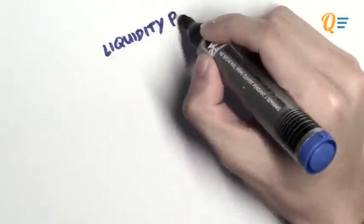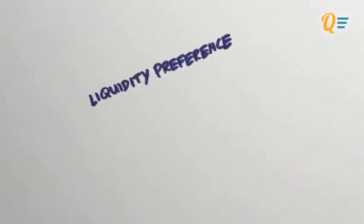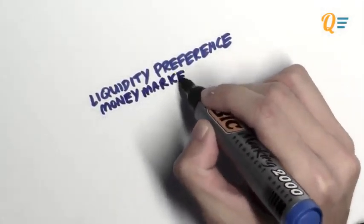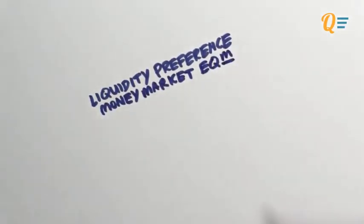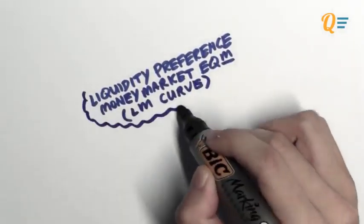Hi everyone. In this video we are going to be talking about the liquidity preference and money market equilibrium, which is also known as your LM curve.